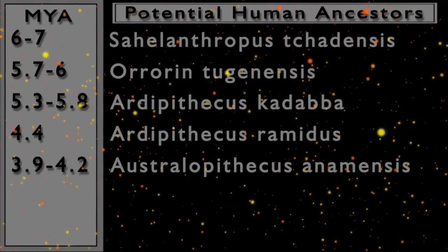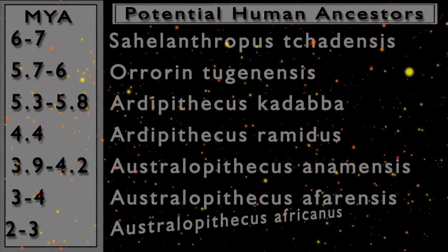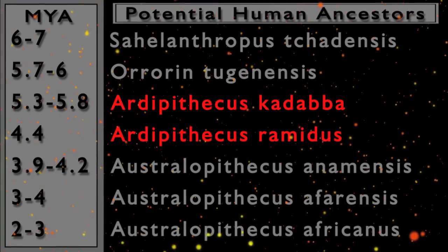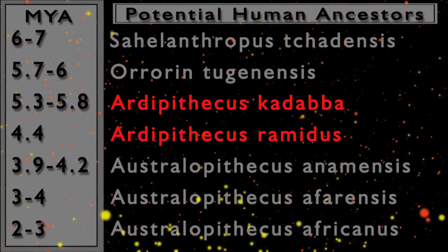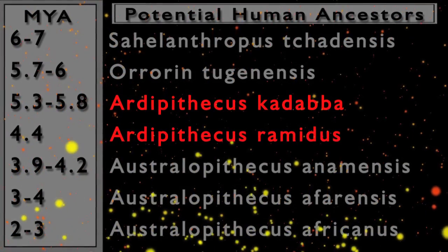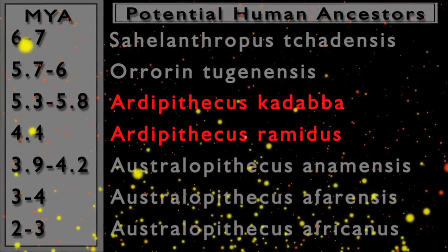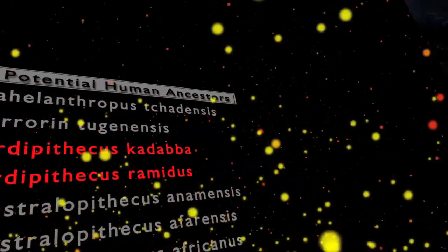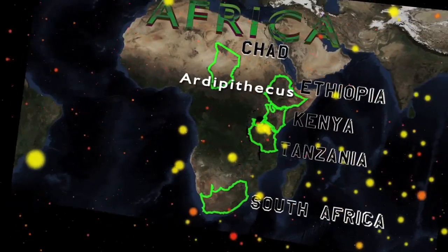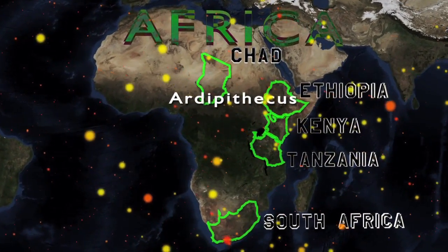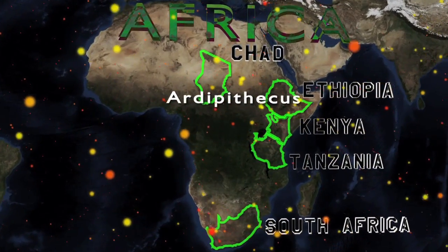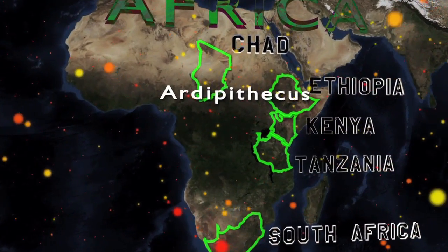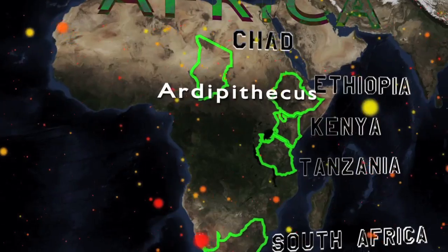Ardipithecus will take us from the late Miocene into the Pliocene epoch at 5.8 to 5.3 million years in the past. Let's continue our quest with a trip to the middle Awash River Valley in northeastern Ethiopia in Africa.